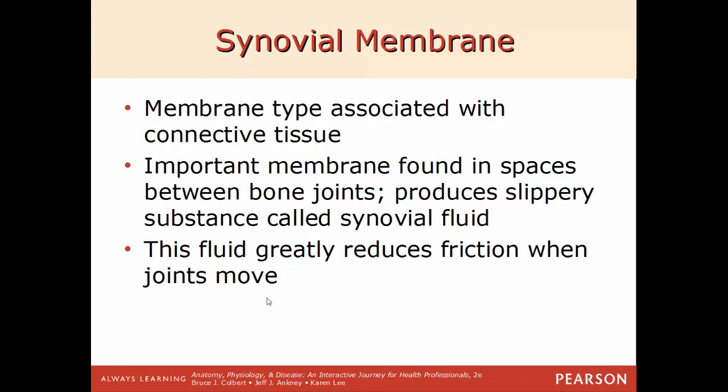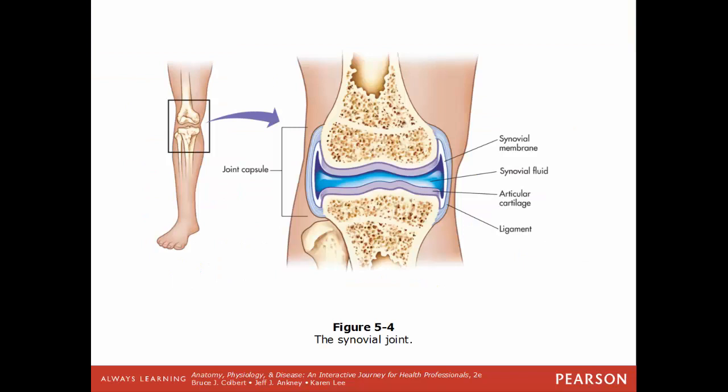The synovial membrane is the membrane type associated with connective tissue. It's an important membrane found in spaces between two bones that form a joint or articulation. This membrane secretes synovial fluid, which helps reduce friction and wear and tear on the bones — that's why you can bend your knee, elbow, and hip without it hurting. As synovial fluid is worn away or not produced as much, it functions like oil in a car's engine: if it isn't there, a lot of damage results.